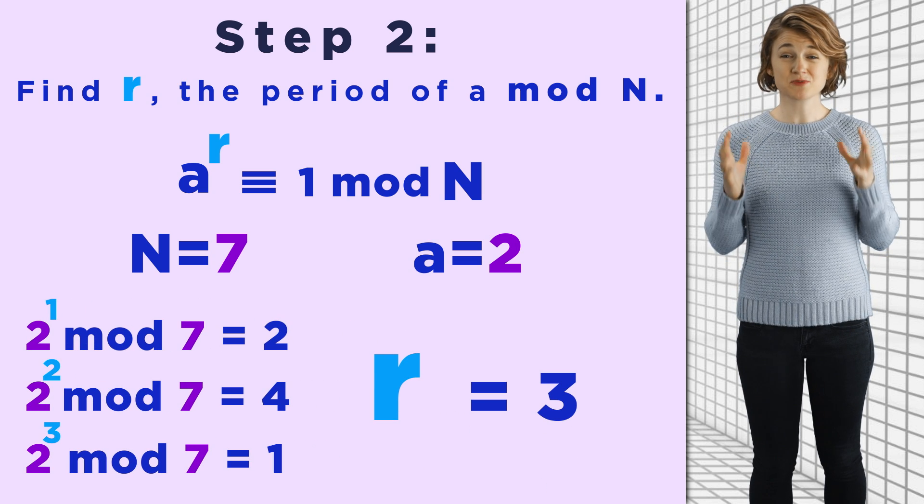But if n is really big, then r, the period, can be basically as big as n. There's no known efficient classical way to find the period. Remember how we tried to find the factors of n by letting the quantum computer act as n parallel classical computers and using each to check a different factor. We could try the same thing to find the period.